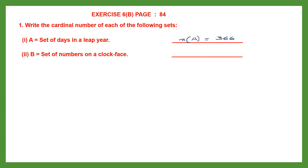Next, Set B is a set of numbers on a clock face. On a clock face, how many numbers are there? There are 12 numbers. So the cardinal number of set B is 12.